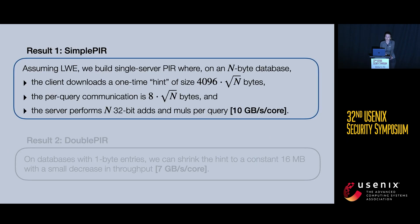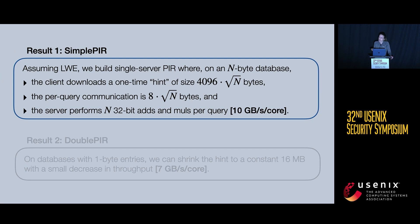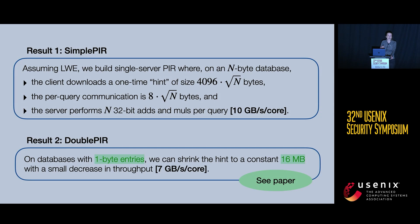So what did we build? A single-server PIR scheme based on the learning with errors assumption. For an n-byte database, the client downloads a one-time hint of size roughly 4,000 times root-n bytes. After that, the client can make an unbounded number of queries, each requiring only 8 times root-n bytes. For each query, the server performs exactly one 32-bit addition and one 32-bit multiplication per byte of the database — no hidden constants — achieving throughput up to 10 gigabytes per core-second. In the paper, we also show that when database records are at most one byte, we can shrink the hint to a constant 16 megabytes regardless of database size, with just a small decrease in server throughput.